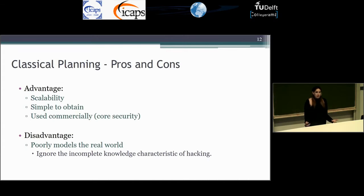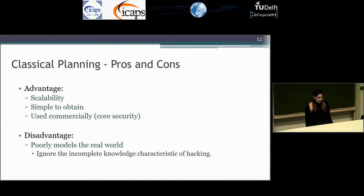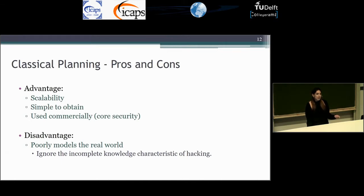The advantage is that classical planning is a really scalable method and it's quite simple to obtain the model. However, we can't capture the uncertainty of the attacker about the network structure, and we produce a really low-cost plan. So we can identify vulnerabilities in classical planning that may never be used by every attacker.